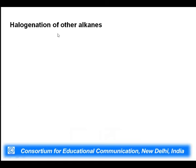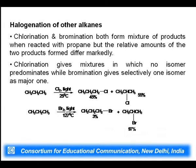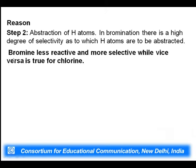Other alkanes like propane can also undergo chlorination and bromination, both giving mixtures of products. For chlorination of propane, the products are 1-chloropropane (45% yield) and 2-chloropropane (55% yield). For bromination (at higher temperature), 1-bromopropane forms in only 3% yield while 2-bromopropane forms in 97% yield. This shows that bromine is more selective and less reactive — a common statement for halogenation reactions.